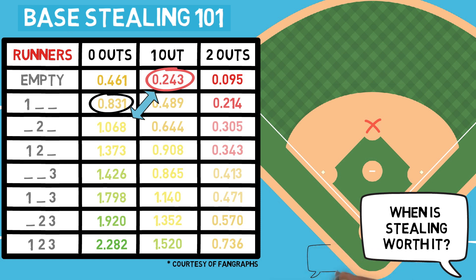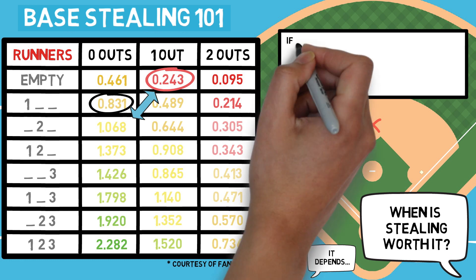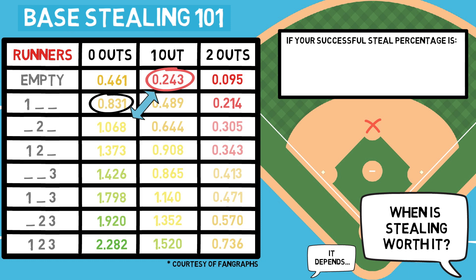The first and default answer to when you should steal is an unsatisfactory 'it depends' — but don't worry, we're not going to stop there. It depends on who you have on first base, obviously. Before we had this data, anyone could assume that the chance of a runner scoring from second was significantly larger than from first, no matter what the risk was of getting them there. With this data, we are actually able to set the bar for how successful a runner needs to be at stealing bases in order for us to take that risk. At the MLB level, our number for this particular situation — runner on first, no outs — is 71%.